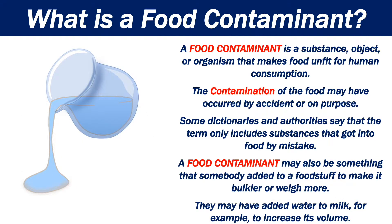A food contaminant may be something that somebody added to a foodstuff to make it bulkier or weigh more. They may have added water to milk, for example, to increase its volume.